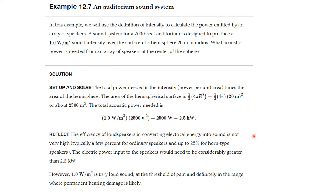As a reflection, the efficiency of loudspeakers in converting electrical energy into sound is not very high. Typically a few percent for ordinary speakers and up to 25% for horn type speakers. The electrical input to the speakers would need to be considerably greater than this because of their efficiency. However, 1.0 watts per square meter is a very large sound. This is actually at the threshold of pain and definitely in the range where permanent hearing damage is likely. A lot of rock musicians actually have such damage and people who go to concerts frequently sometimes have that damage as well.